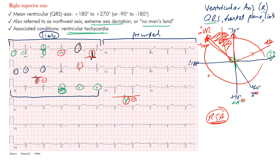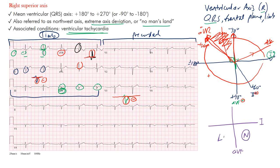We don't often find many narrow complex rhythms ending up as right superior axis, but if a patient has had a previous infarct in a region opposite to it, you may see most electrical impulses heading that direction. This example used multiple leads to confirm — it's a bit more complicated, but worth working through. Usually a few leads are enough.